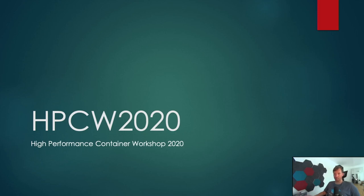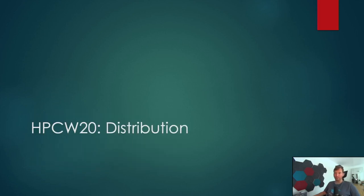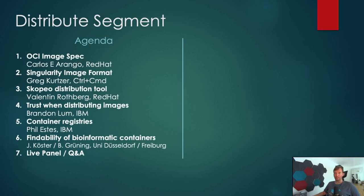Alright, second day of the High Performance Container Workshop 2020, the virtual edition. We will talk about distribution and orchestration in the second segment, but the first segment is going to be distribution. Carlos or 8auto will start off with the OCI image spec — an overview of what it contains. Then Greg will talk about the Singularity image format and what makes it special. Scopio, a distribution tool, is presented by Valentine — a nice tool to inspect images without downloading everything and for copying from different backends.